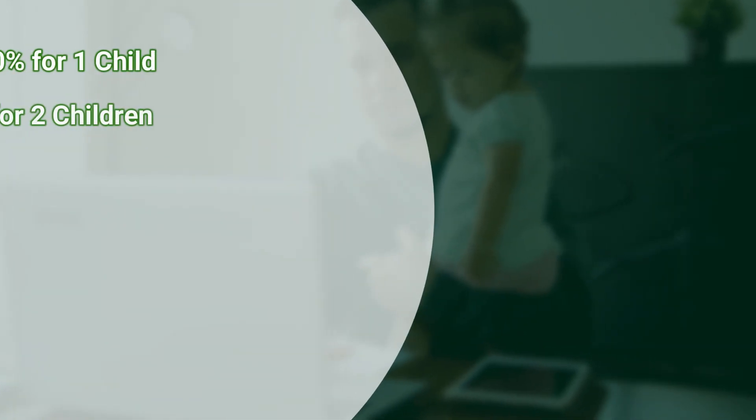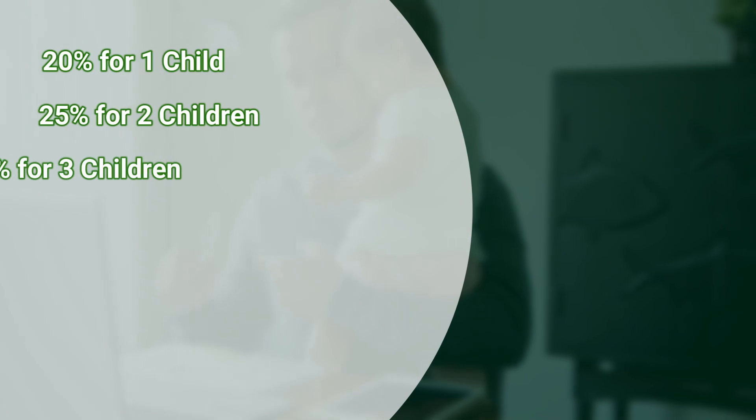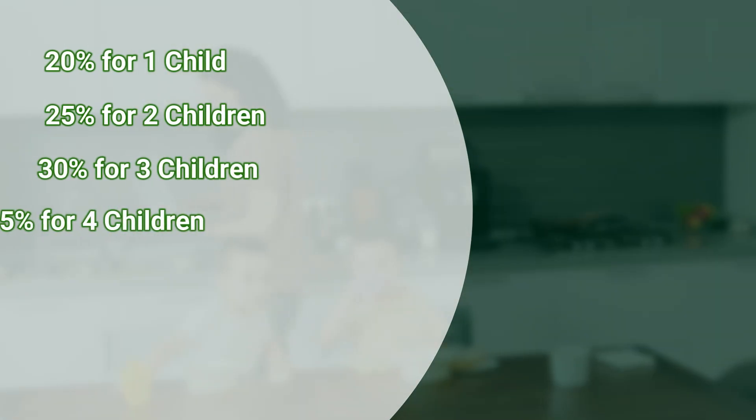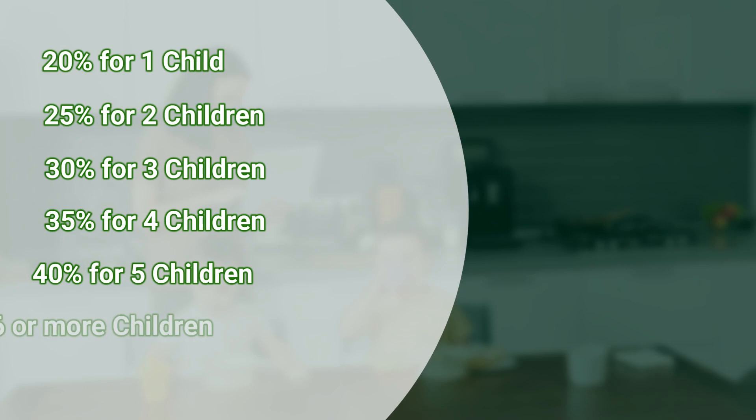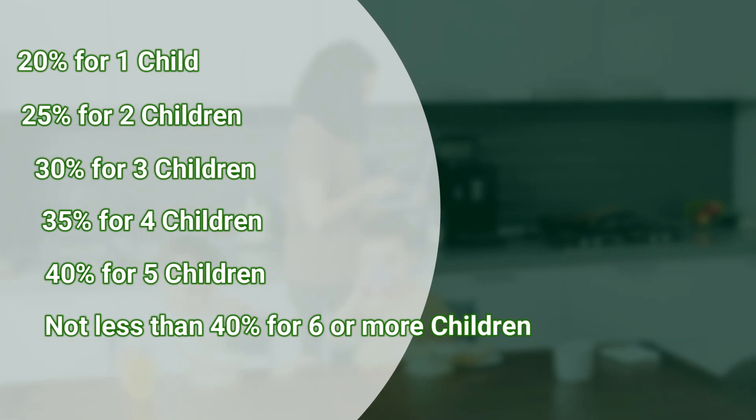Now let's dive into how child support is calculated in Texas. The process is based on a percentage of the non-custodial parent's monthly net resources up to a certain cap that adjusts periodically for inflation. Here are the basic guidelines: 20% for one child, 25% for two children, 30% for three, 35% for four children, 40% for five children, and not less than 40% for six or more kids. Remember, these are just guidelines and the court can deviate from them if it's in the best interest of the child.